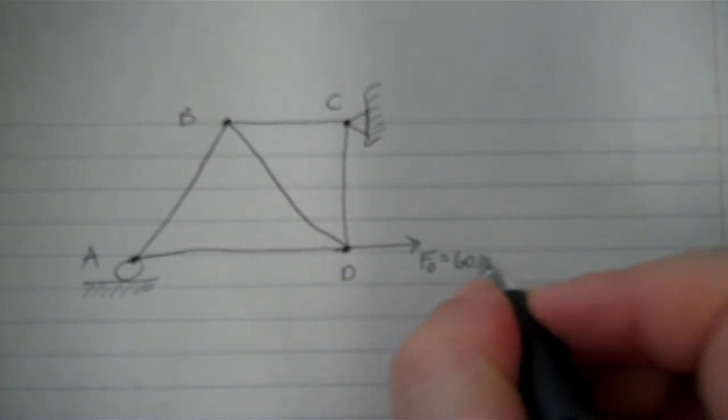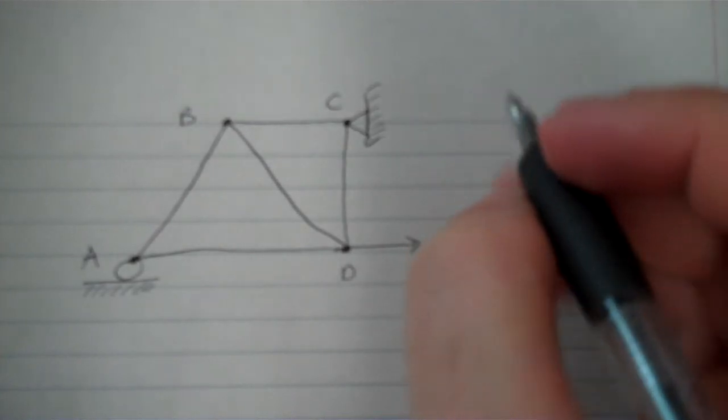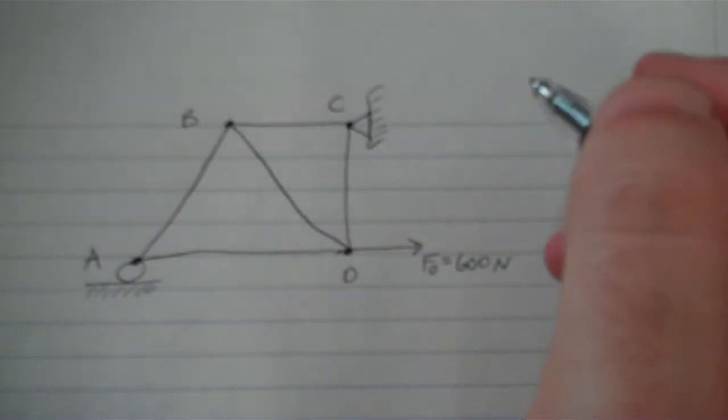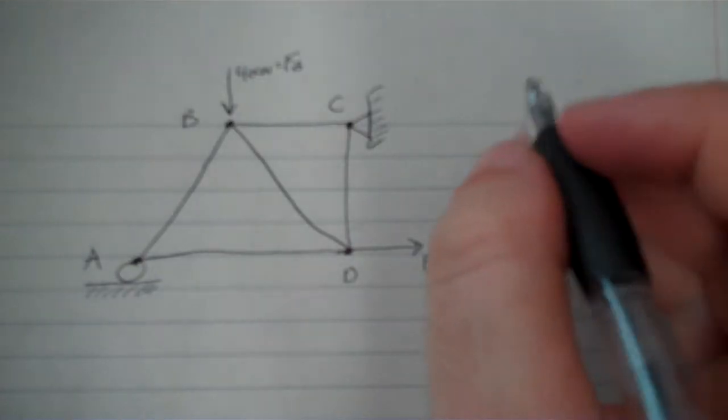Which is 600 newtons. I'm taking this from the example on the trusses free body diagrams page that I set up a while ago. And another 400 newton force here I'll call force B. And that's it.